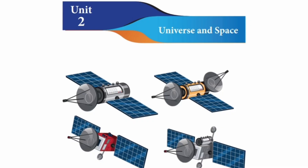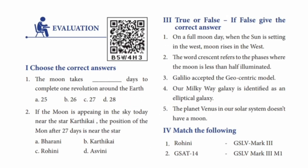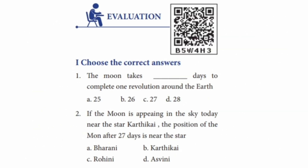7th Standard Science, Term 3, Unit 2: Universe and Space — Book Back Exercise. Choose the Correct Answers. Question 1: The Moon takes how many days to complete one revolution around the Earth? The correct answer is 27 days. The Moon takes 27 days to complete one revolution around the Earth.